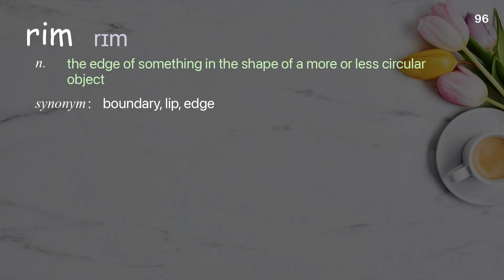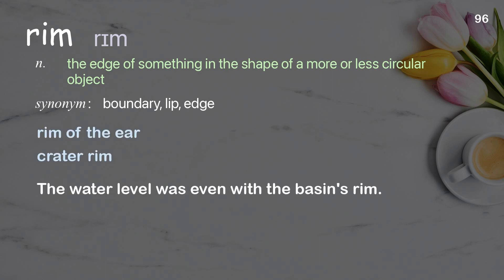Rim: The edge of something in the shape of a more or less circular object. Examples: Rim of the year. Crater rim. The water level was even with the basin's rim.